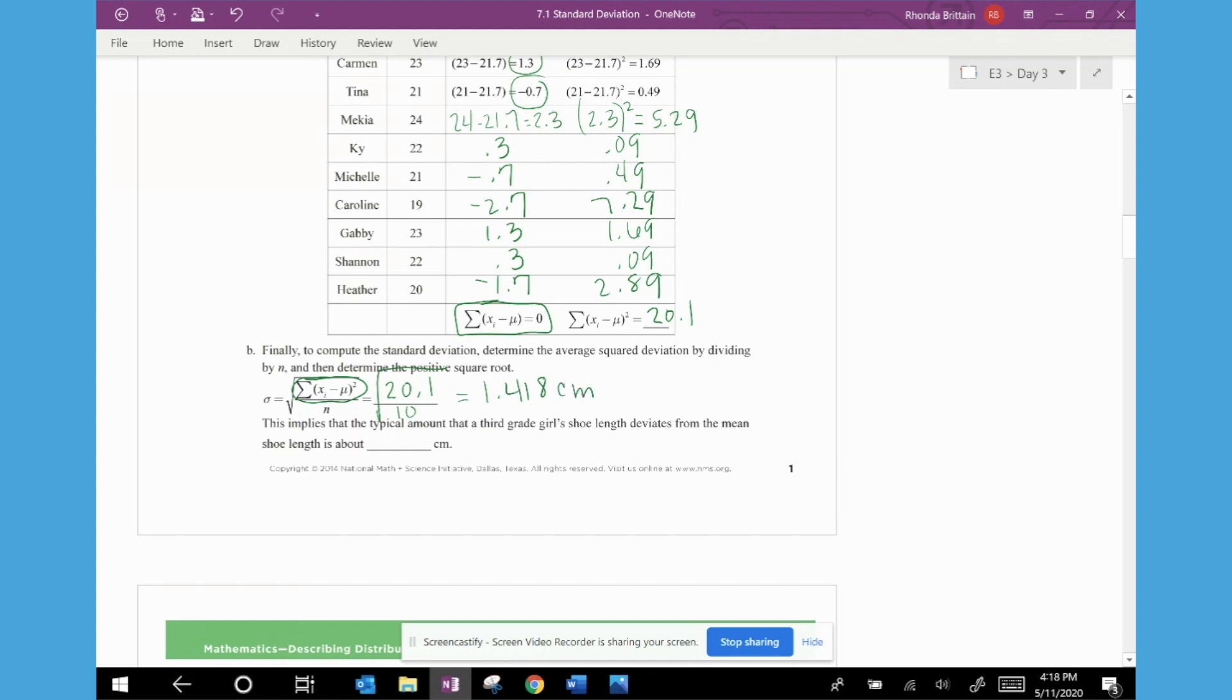Now, there is another standard deviation calculation called the sample standard deviation. And some of you may be aware that it's a similar, it's actually the same formula, but the denominator is the only thing that's different. So we would take the square deviations, add those up, but divide by n minus 1. But for this lesson, we're going to be using the population standard deviation rather than the sample standard deviation.